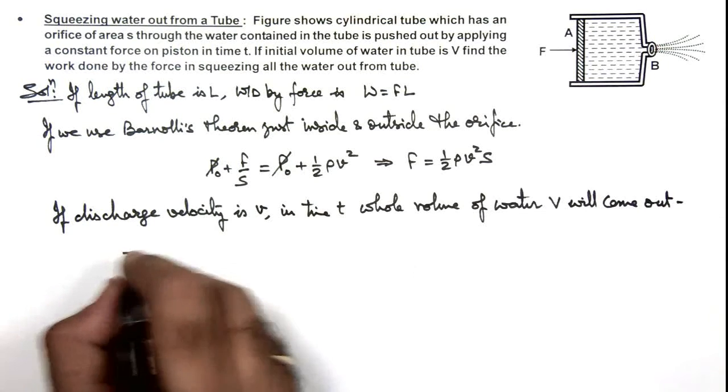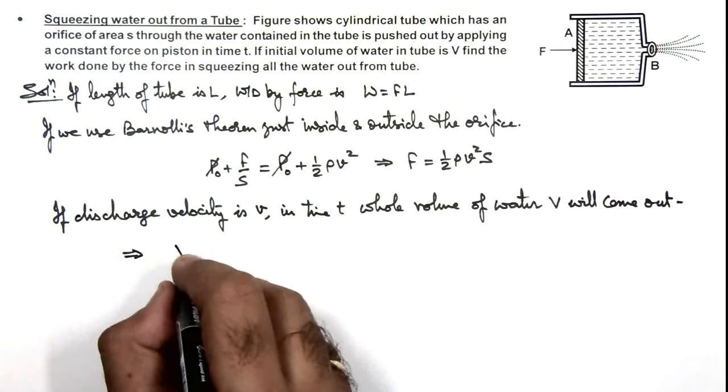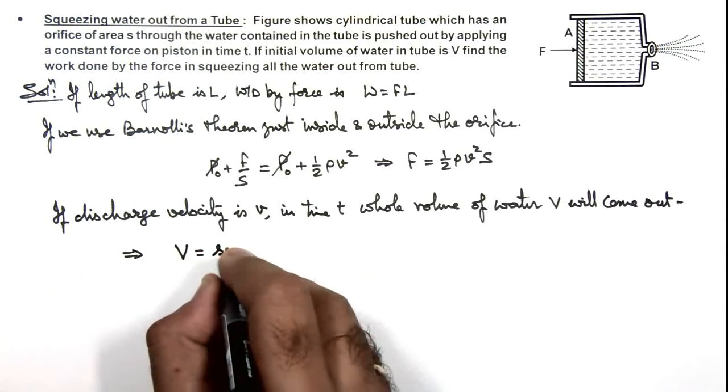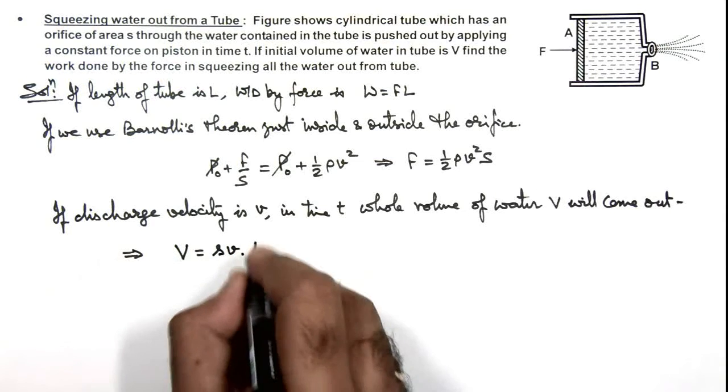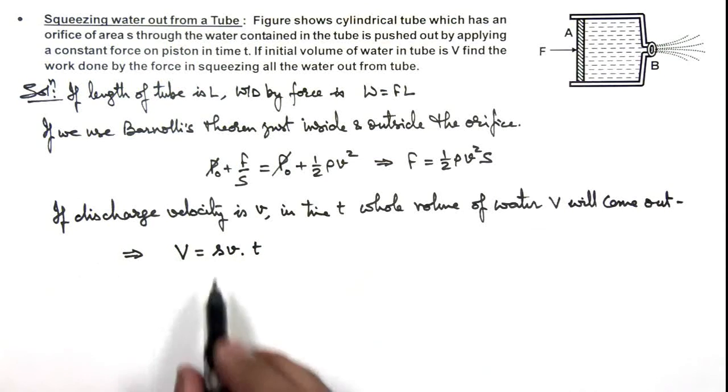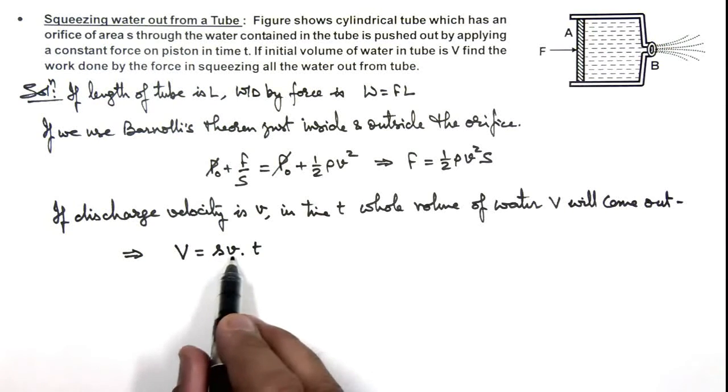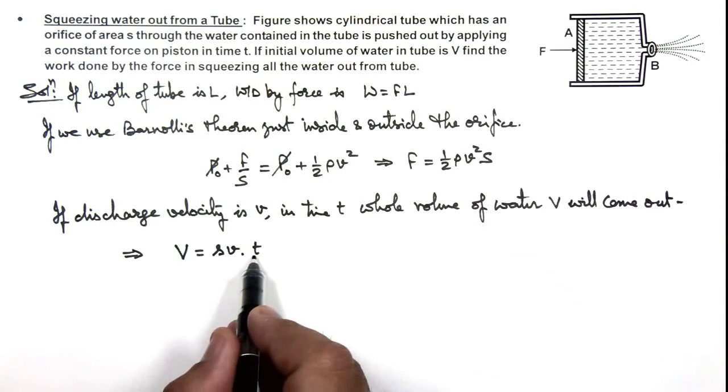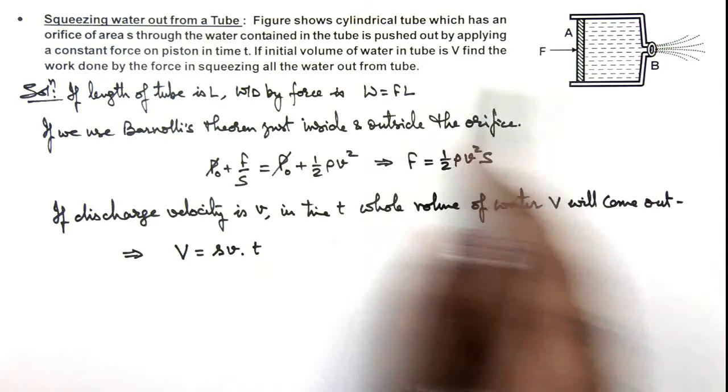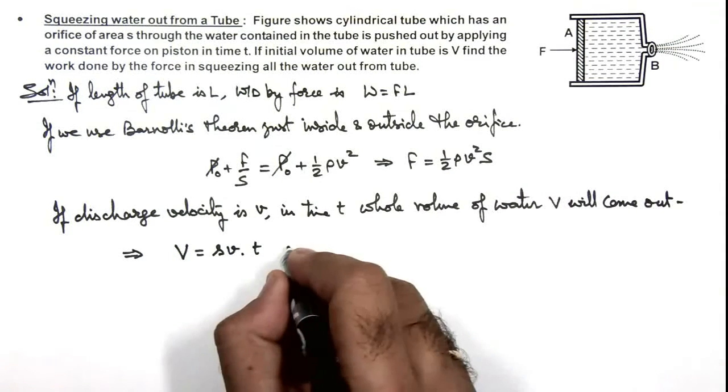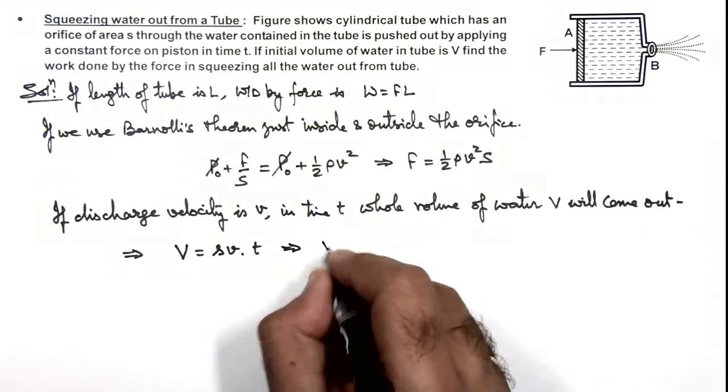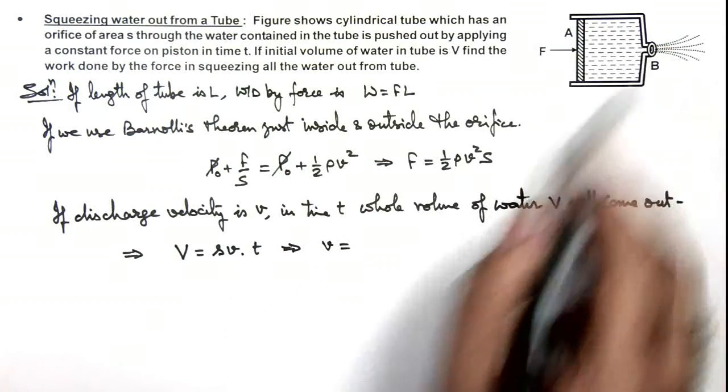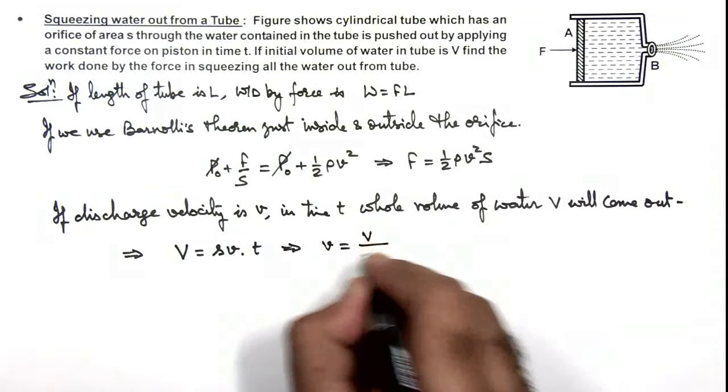This implies the total volume equals volume flow rate, which is small s multiplied by discharge velocity multiplied by time. Flow rate is area of orifice multiplied by the efflux velocity, multiplied with time, giving us the total volume which is squeezing out. This gives us the flow velocity of liquid as V divided by st.